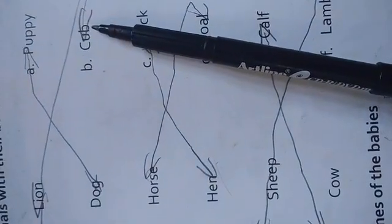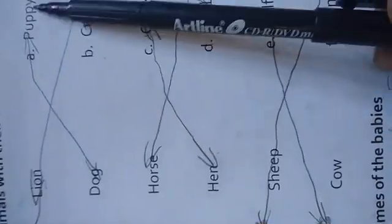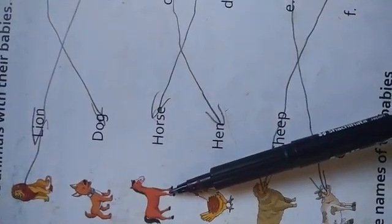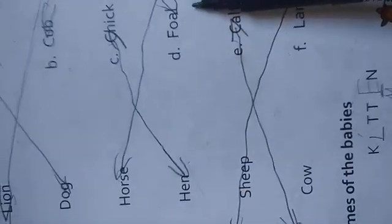Lion. This is a dog. This is a puppy. This is a horse. Foal is a puppy.